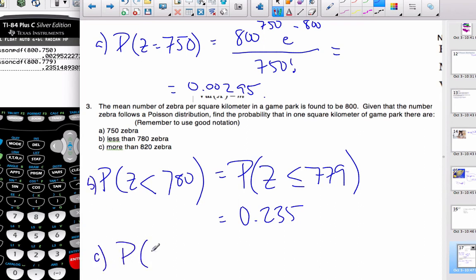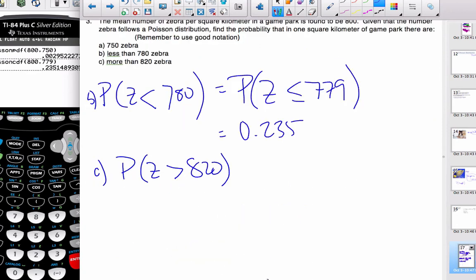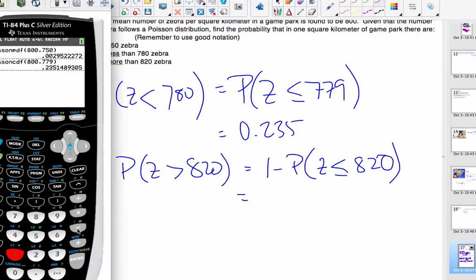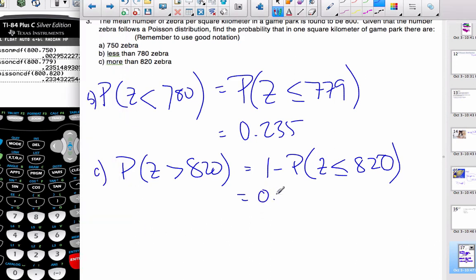For part c, I want to find the probability that Z is bigger than 820. With our cumulative distributions, it starts at 0. So I have to go 1 minus the probability that Z is less than or equal to 820. Plug this into the calculator: 1 minus the Poisson cumulative distribution with parameter 800 and value 820. I get 0.233.